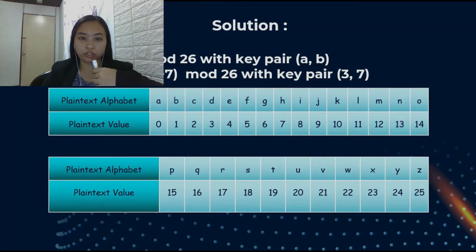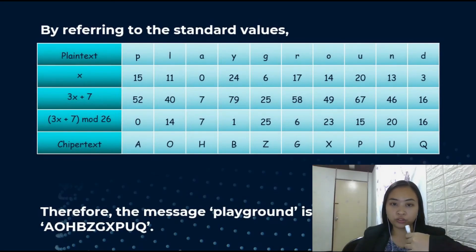The table shows the standard values of 26 alphabets from A to Z. It also starts from 0 to 25. By referring to the standard values, we make a table with two columns where the first column contains plaintext, E(X), 3X plus 7, 3X plus 7 mod 26, and ciphertext. The first row is actually the plaintext that is playground. Put each letter in the first row. And then, find each X by referring to the standard values table. Next, calculate 3X plus 7 and 3X plus 7 mod 26 with the X. And then, the final number will be obtained and we will refer to standard values table once again. Therefore, the message playground is encrypted to A O H B Z G X P U Q.